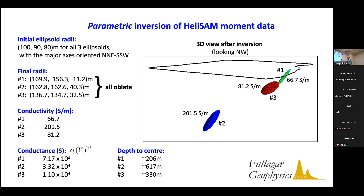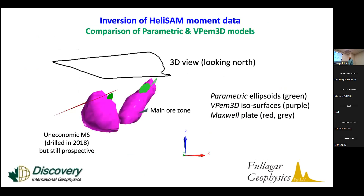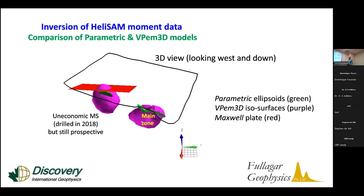The ellipsoids have different dimensions; the conductances are computed using that first formula. The highest conductivity body is body two, which is the deep one. The other bodies are still very attractive conductors but of large dimensions. This is a comparison between those ellipsoids and the previously run VPEN3D smooth model inversion. The ellipsoids coincide with parts of the large isosurfaces from the smooth model, which is encouraging. Looking at a different view, the comparison between the large smooth model and inverted ellipsoid results is reasonable, including a massive difference in volume between the two.